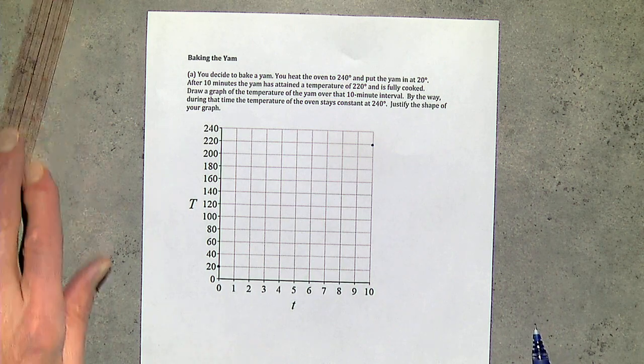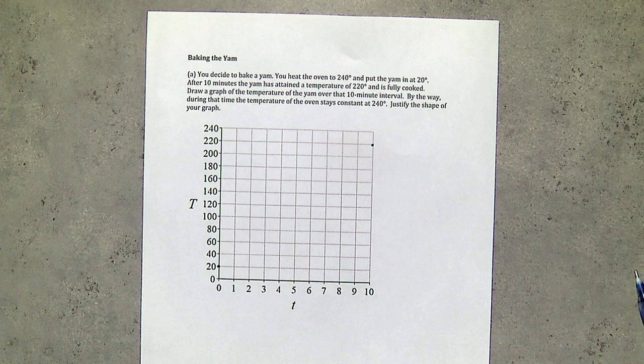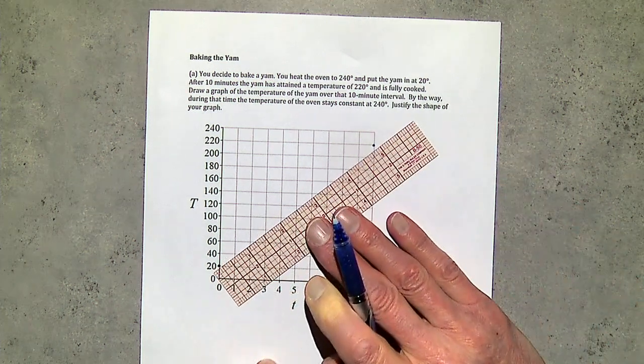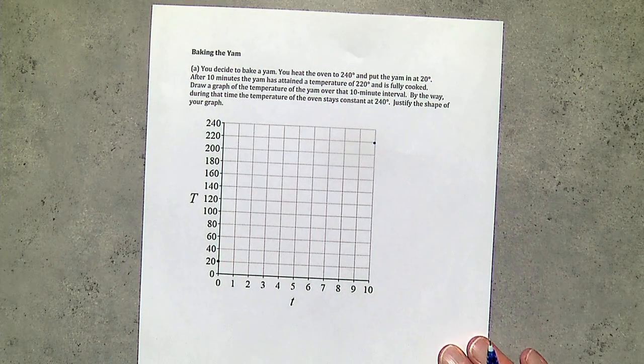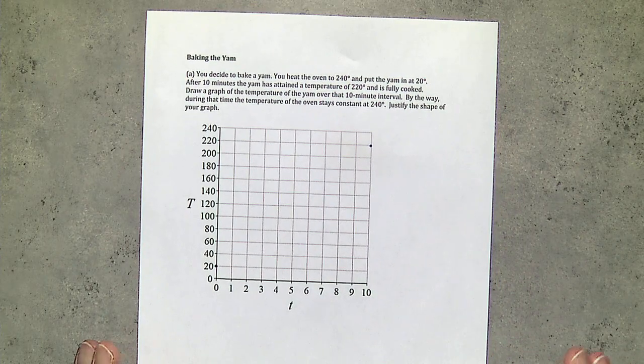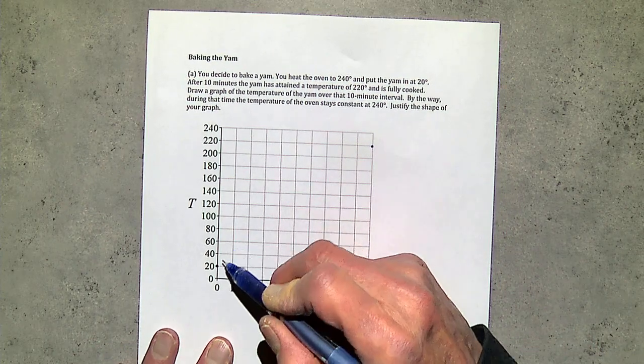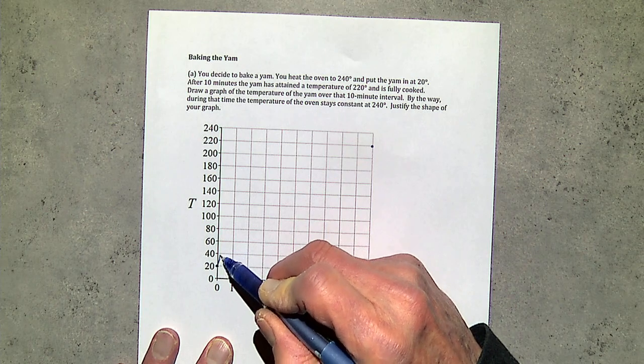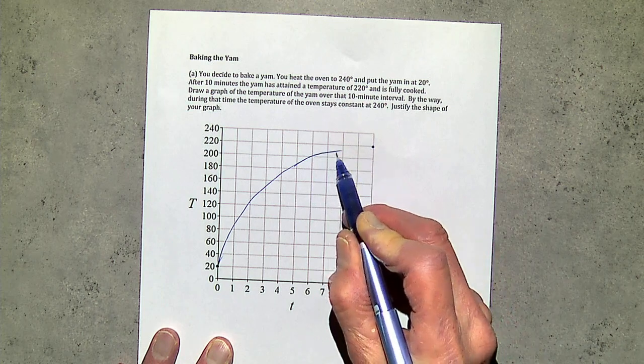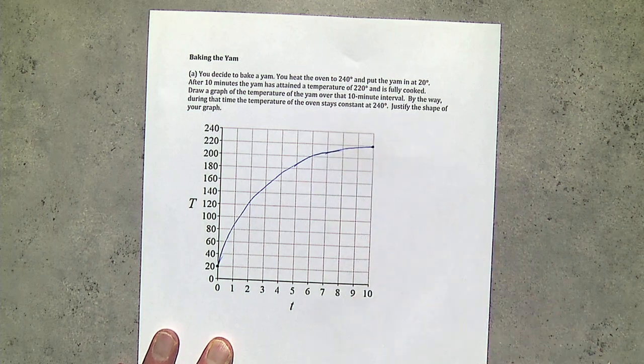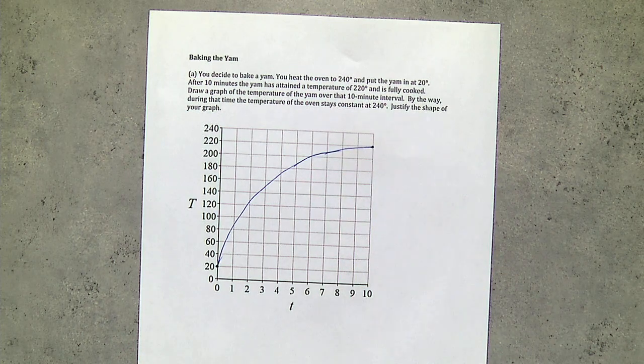I have a yam and I want to bake it. So, I turn my oven on to 240 degrees. The yam starts at room temperature at 20 degrees and it's cooked when it reaches 220 degrees. And that takes exactly 10 minutes in the oven. And so, I asked Roger, what does the temperature time graph look like over that 10 minute period? How does the temperature of the yam change from 20 up to 220? So, draw me a graph of what it looks like.